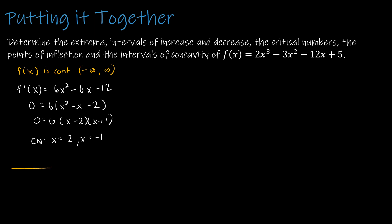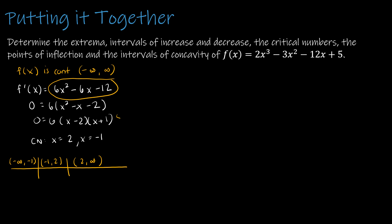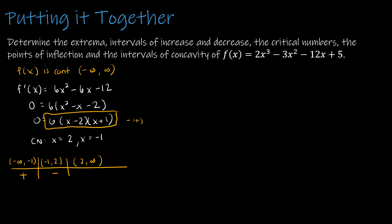Setting up intervals: negative infinity to negative 1, negative 1 to 2, and 2 to infinity. Plugging test values into the factored derivative — using negative 2 gives a negative times a negative, which is positive. Using 0 gives a negative times a positive, which is negative. Using 3 gives a positive times a positive, which is positive. So I have found the intervals of increase and decrease and the critical numbers.